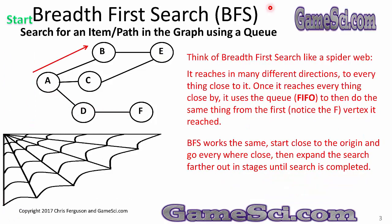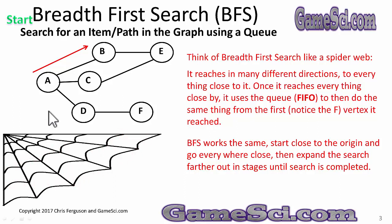Breadth-first search, BFS, searches for an item or path in the graph using a queue. Think of BFS like a spider web — it reaches in many directions to everything close to it. Once it reaches everything close by, it uses the queue, first-in first-out, to do the same search from the first vertex it reached. BFS starts close to the origin and goes everywhere close, then expands the search further out in stages until complete.